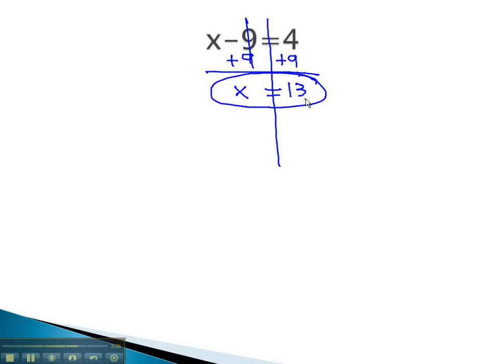We can verify that this is the correct answer by taking the thirteen and plugging it in for the x. We can check it by saying x minus nine, or thirteen minus nine, does it equal four? Well yeah, thirteen minus nine is equal to four. It checks, so I know my answer is correct.